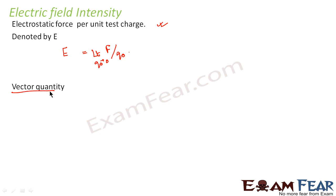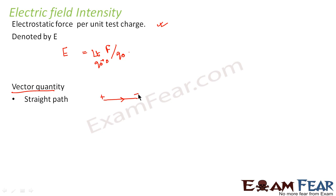Electric field intensity is a vector quantity — it has both magnitude as well as direction. When we talk about the direction of electric field intensity in case of a straight path, it always originates from a positive charge and goes towards a negative charge. When it is about a curved path, the electric field intensity can be given by the tangent at every point, but even there it will originate from positive and terminate at negative.